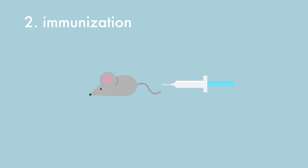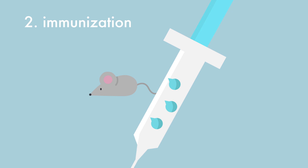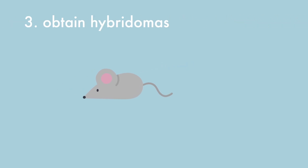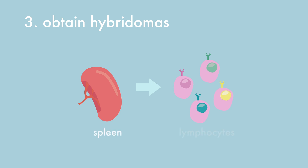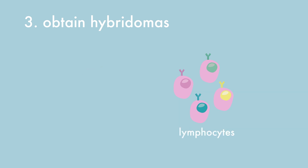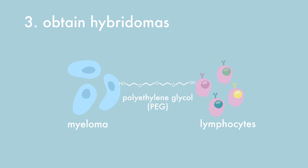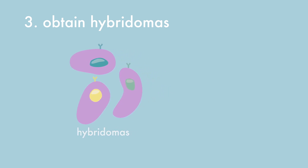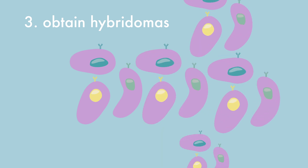The classic way to make a monoclonal antibody starts by immunizing a laboratory animal, such as mice, with a purified human protein against which the antibody should be directed. The immunization process — a number of injections with the antigen and an adjuvant — will take several weeks. Then the spleens of these mice are removed and lymphocytes are isolated. Subsequently, the lymphocytes are fused using polyethylene glycol with a myeloma cell. The resulting hybridoma cell inherits from the lymphocytes the ability to produce antibodies, and from the myeloma cell the ability to divide indefinitely.